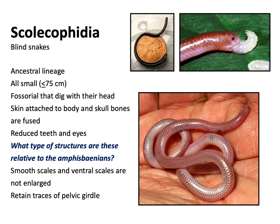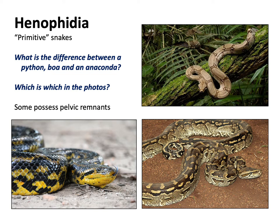The henophidia are basically your pythons, boas, and anacondas. Pythons are old world snakes — found in Asia, Africa, and Australia — whereas boas and anacondas are new world snakes. An anaconda is basically a really large boa. In terms of reproduction, anacondas and boas are viviparous — they give live birth — whereas pythons are oviparous, producing eggs in a nest. Other than that, they're pretty similar: strong constrictor snakes, can be very large, essentially ambush predators, and almost entirely restricted to the tropics.